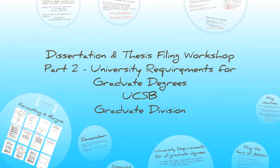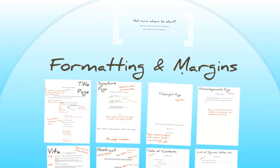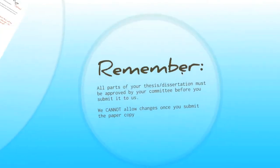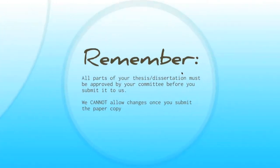We're going to talk about some of the more basic university requirements for your degree here. In part one, we talked about formatting and margins for the dissertation and thesis. In this part, we're going to continue. First, I want to mention that when you turn in your dissertation or thesis, everything needs to be approved before you turn it in to us. We can't allow you to make any changes after you turn in the copy to us, so be sure that you do all the double-checking you need to do before you turn it into our office.